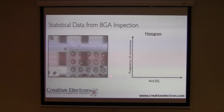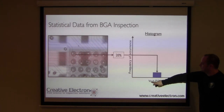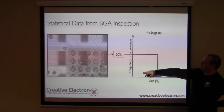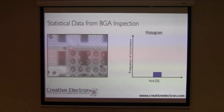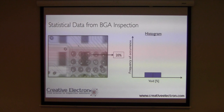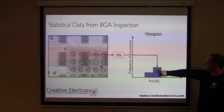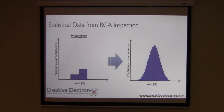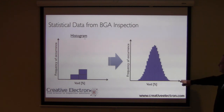Let's say the metric that we're trying to analyze here is voiding on this ball grid array. We're going to measure the void — this is all done automatically. We measure the void on this first ball: we got 20%, so we populate one occurrence at 20% in the histogram. The horizontal axis gives you the metric, in this case voiding on the BGA. The vertical axis presents the frequency of occurrence. We measure the voiding on the second ball: we get 10%, so we populate one occurrence of 10%. The third ball shows voiding of 20% again, so now 20% has two occurrences. We take that concept and keep doing it over and over again, ending up with a histogram like this one. Following the law of large numbers, if you collect enough data, you eventually end up with something that looks like a Gaussian.